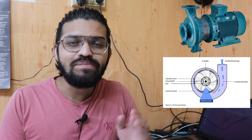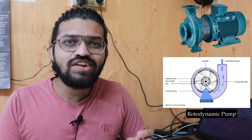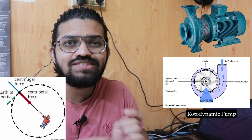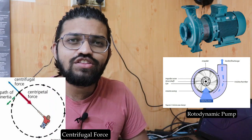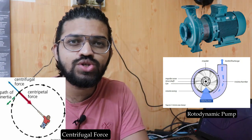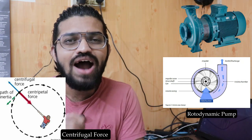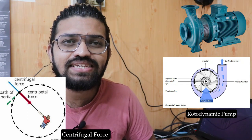The centrifugal pump can also be called a rotodynamic pump. It works on the principle of centrifugal force. Dynamic pressure is developed using centrifugal force, and it enables the pump to lift liquid from a lower potential head to a higher potential head by increasing its pressure and velocity.